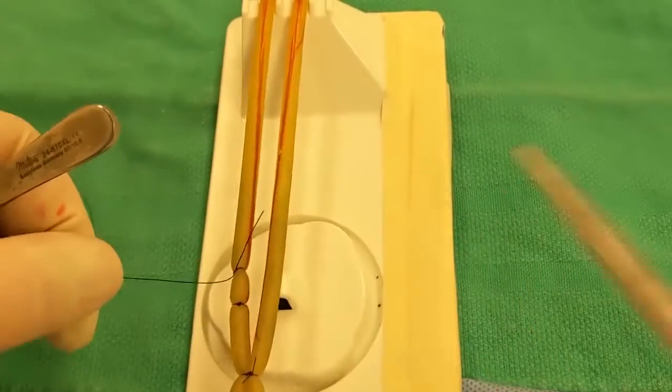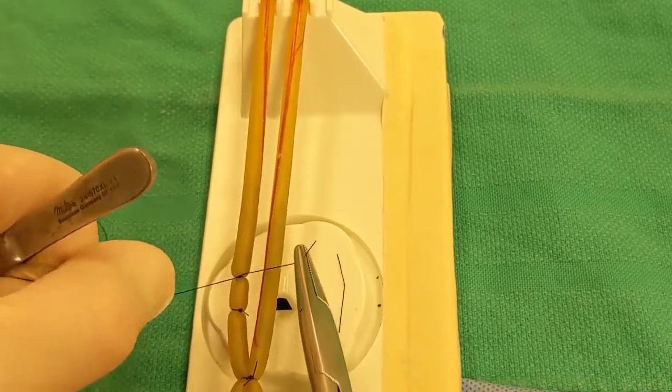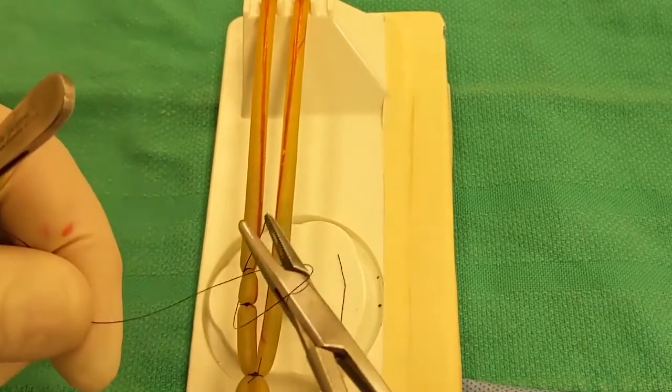If your suture ever breaks when tightening a knot, you should always re-tighten that throw before your next throw, because the throw can loosen up when the suture breaks.